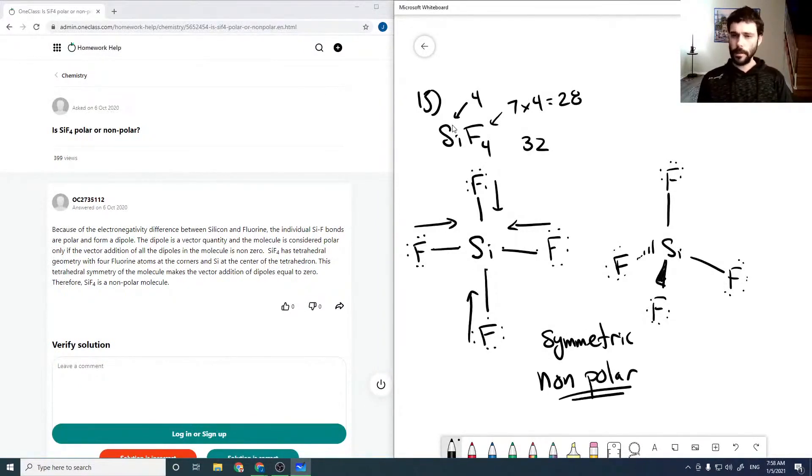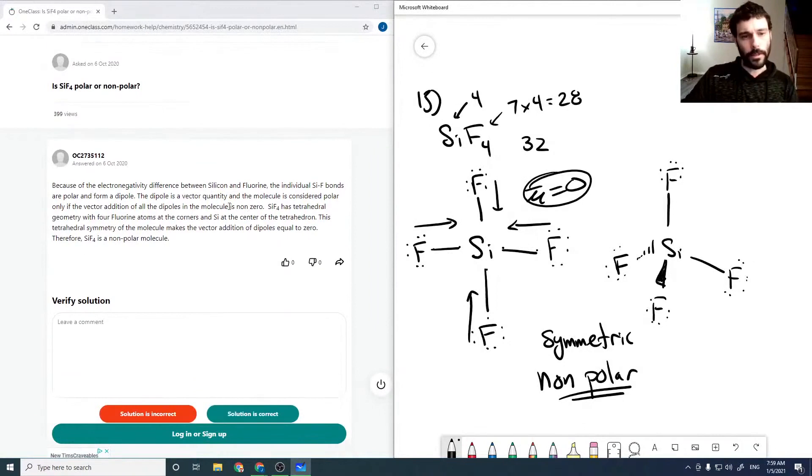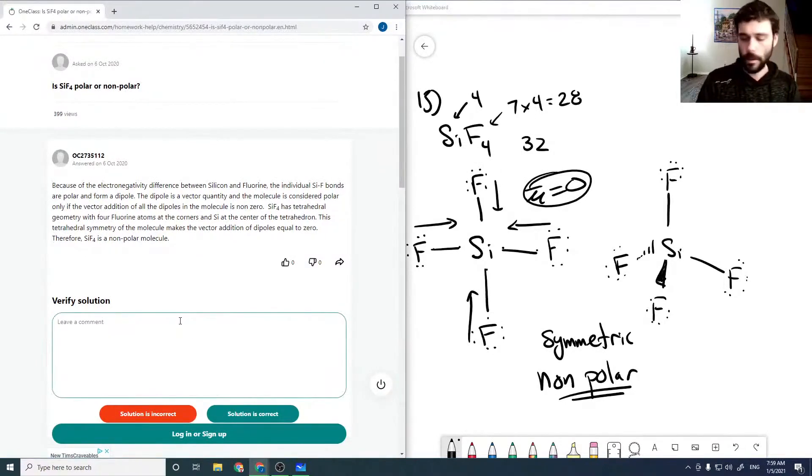That's because each of our little dipoles cancel, so our total dipole cancels, giving us a nonpolar molecule. Each of the SiF bonds would have a dipole, but they would all cancel, giving us a net dipole of zero. So it's nonpolar.